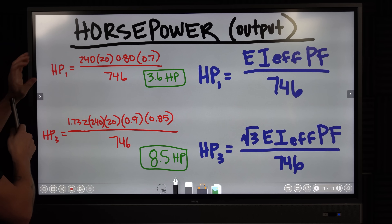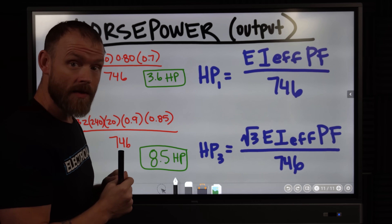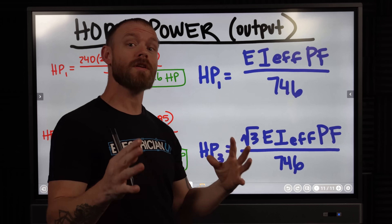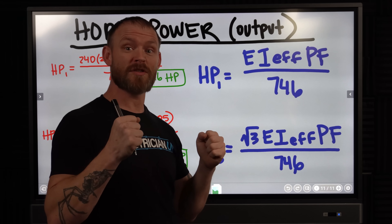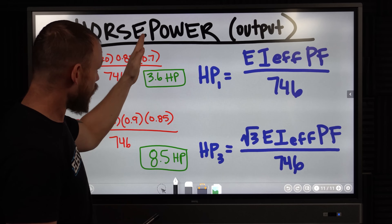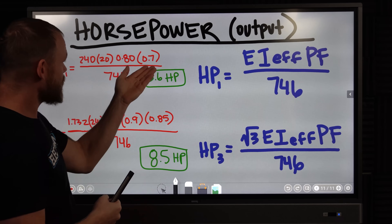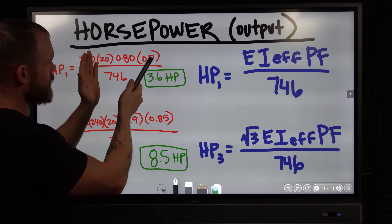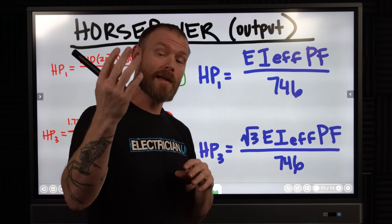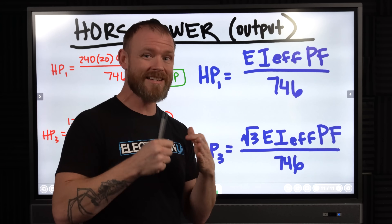For a single-phase horsepower example: 240-volt circuit, 20-amp motor, 80% efficiency (0.8), power factor of 0.7 — divide by 746 — and you get 3.6 horsepower. Note that 0.7 is a pretty terrible power factor; unity (1.0) means voltage and amperage are perfectly in phase with no reactance lag. For actual conductor sizing and breaker sizing on motors, you'll use NEC Article 430, sections 247 through 250 for single phase, three phase, and DC.